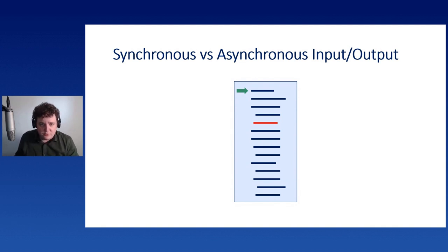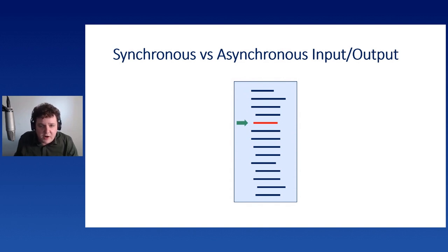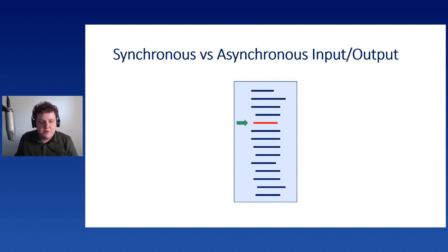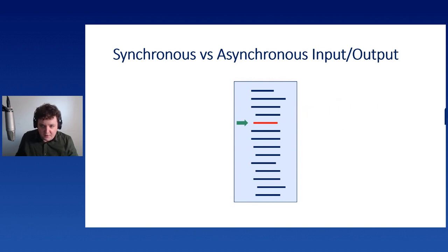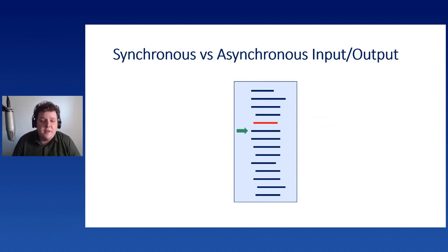Python goes to the first instruction, then the second, and only moves on once that instruction is completed. When we hit an instruction that performs input and output - making a query to a database server and getting a result back - Python will just sit here waiting for the response to come back. Only once it's ready will it move on to the next instruction. This is what a single-threaded application normally does.